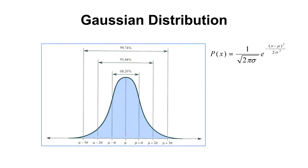The Gaussian distribution can be described with an equation—e to the minus x squared—with a few more parameters. It plots probability of x on the y-axis and x on the bottom. The parameters are: sigma, representing the standard deviation; sigma squared, representing the variance; x, the variable being plotted; and mu, which is the average. Plugging in all these numbers generates the curve.